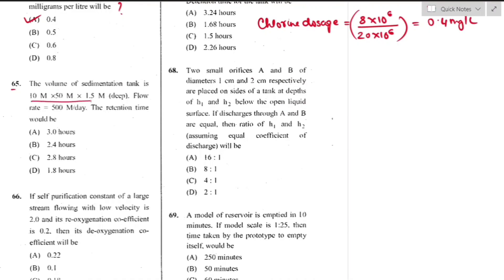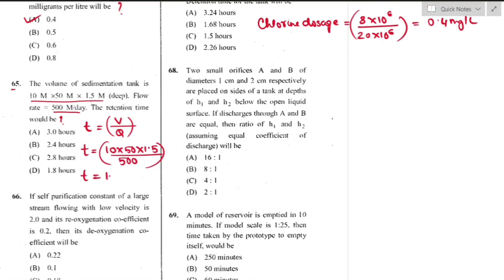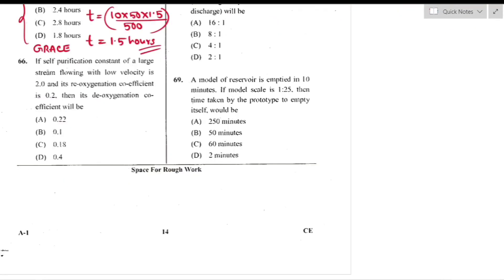Question number 65: Volume of sedimentation tank = 10 m × 50 m × 1.5 m deep; flow rate = 500 m³/day. Retention time = volume / flow rate = 1.5 hours. The correct answer was not among the options, so this question was declared as grace marks.